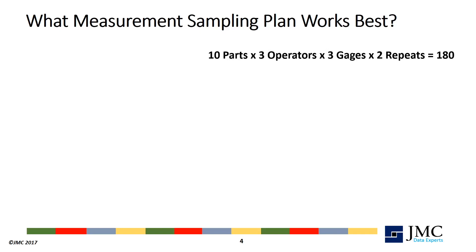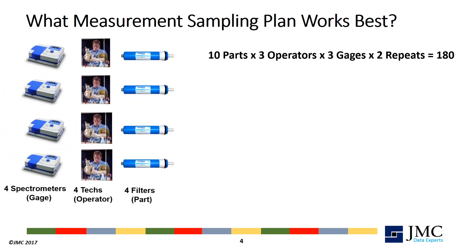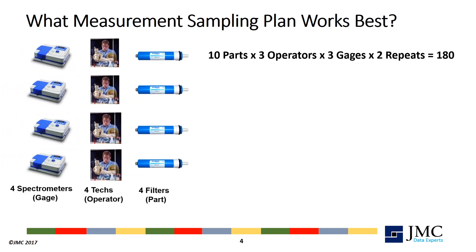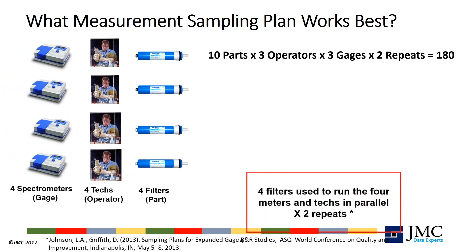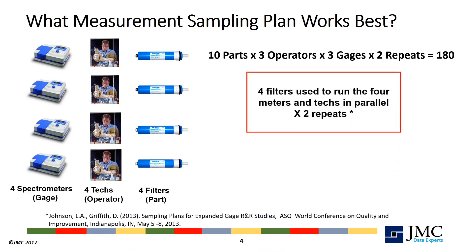After all, 3 works for the operators, why not the gauges? In fact, this commonly used plan turns out to be an extremely poor sampling plan. Simulation studies have shown that equally sampling the operators, gauges, and parts using 2 repeats is the most effective sampling plan.